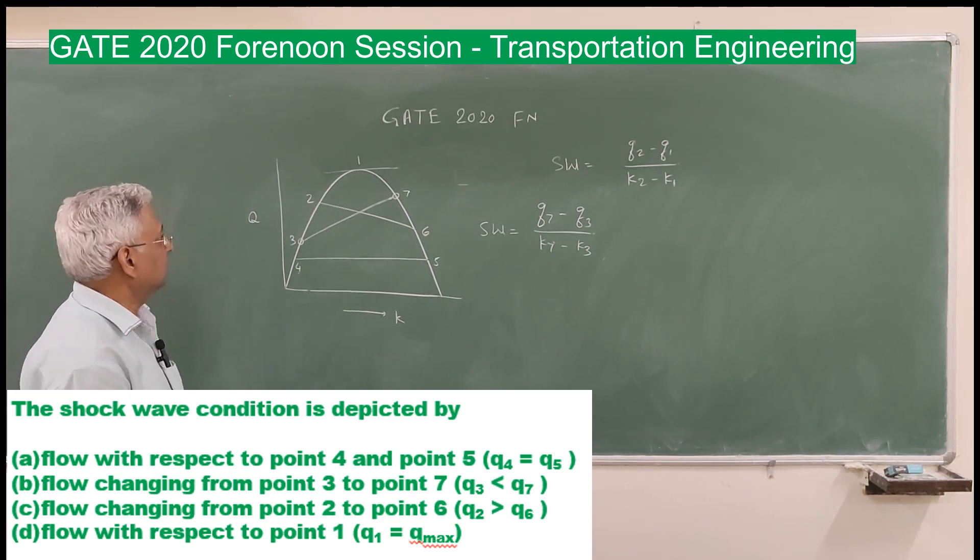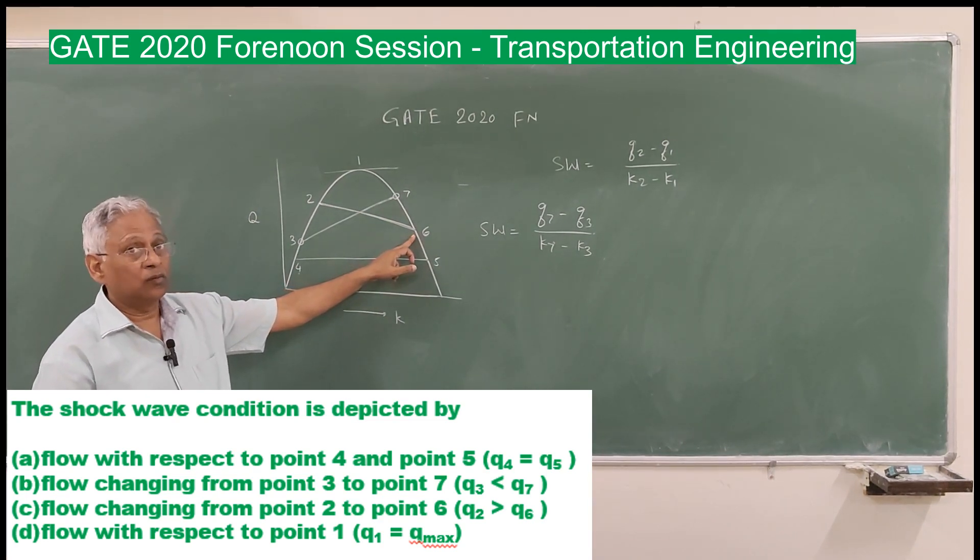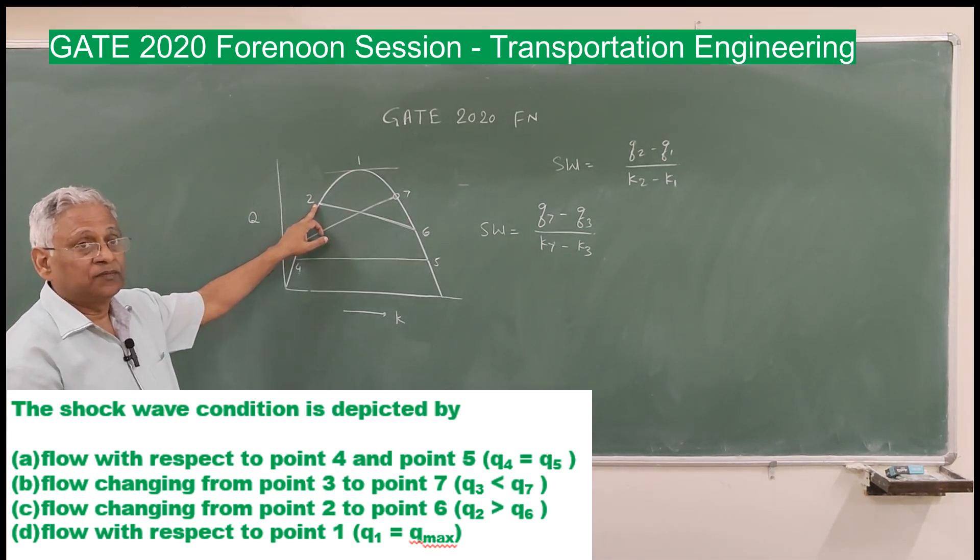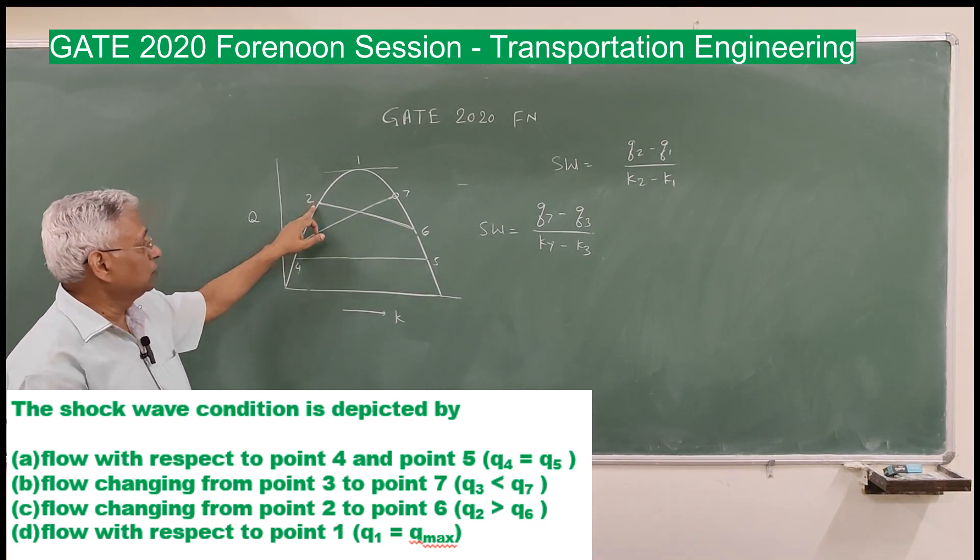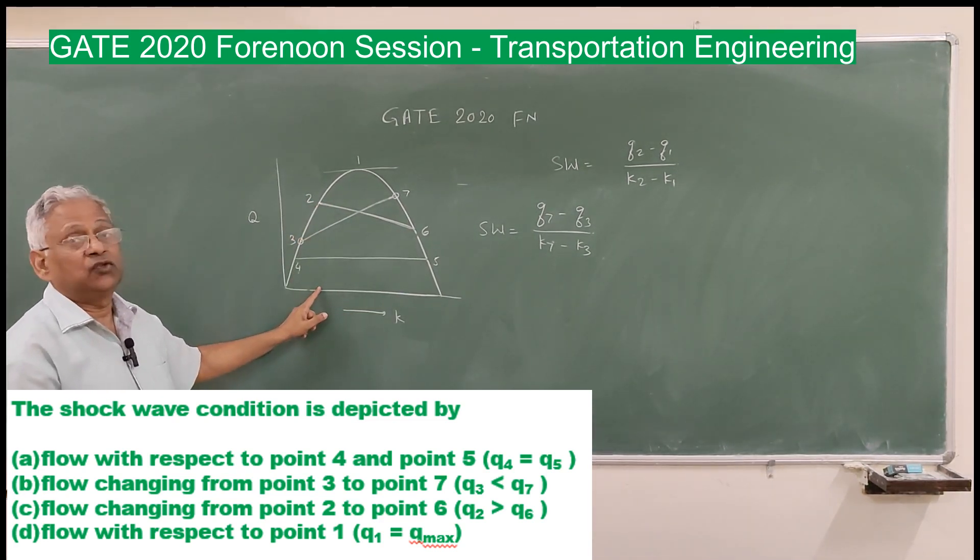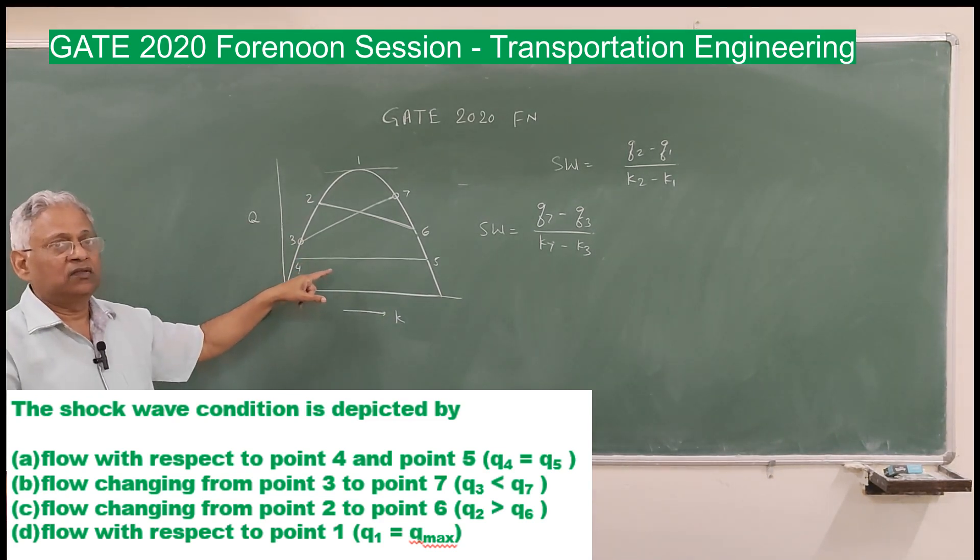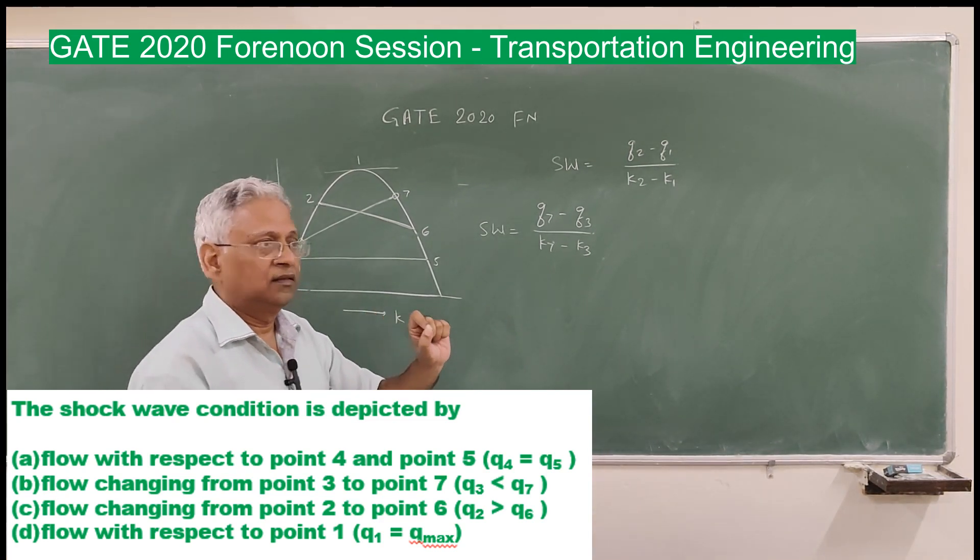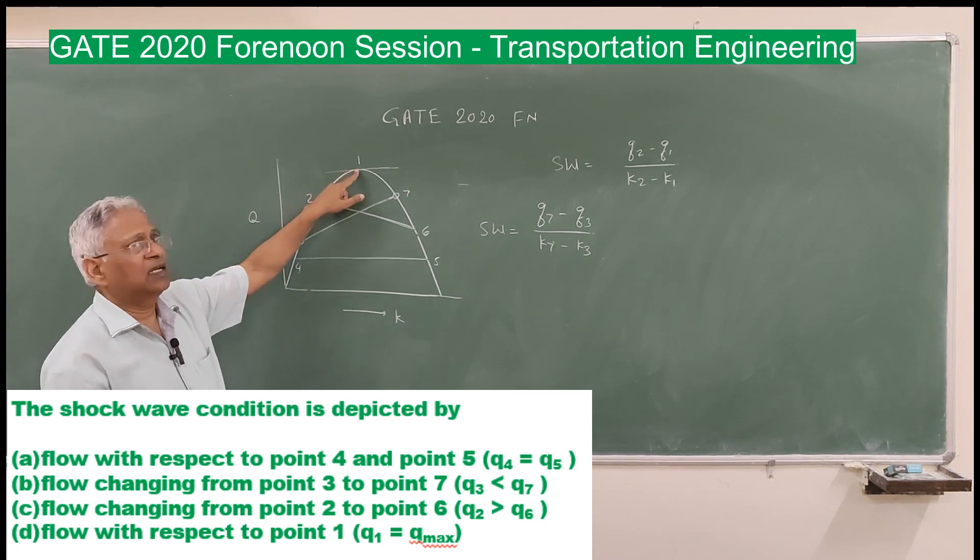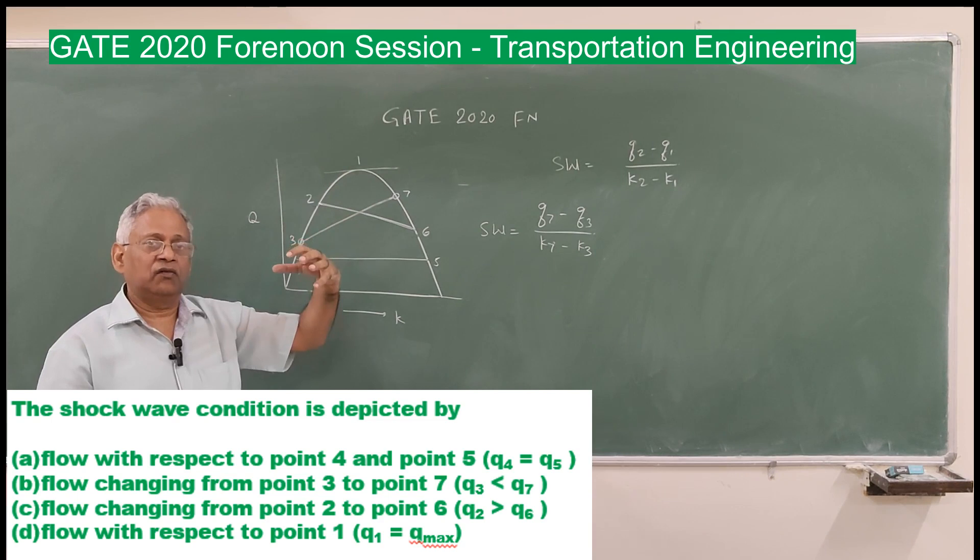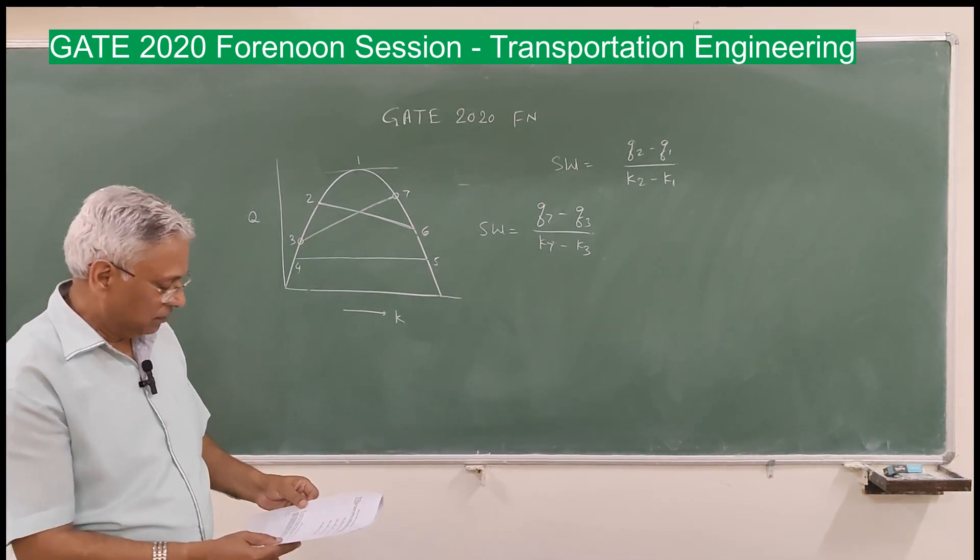If shock wave speed is positive, it goes forward. If it is negative, it goes backward. This will create a shock wave here, so option B is correct. C is flow changing from 2 to 6. This can also be a shock wave. Here the density is high, flow is low. Here the flow is high, density is low. Therefore, this can also represent a shock wave. Wave speed will be Q6 minus Q2 upon K6 minus K2. This can also be. So option C is also correct. That is why I told you this is not a good question to be asked because it has confusion. In this question, only one answer is correct, but there are two answers which seem to be correct. The last one flow with respect to point 1. This is a capacity, maximum flow. For generation of a shock wave, you need two points. A single point cannot generate the shock wave. Therefore, this is also not correct. That is all about question number 5.